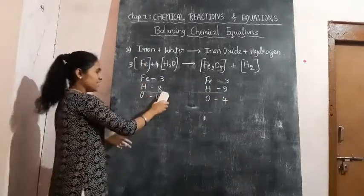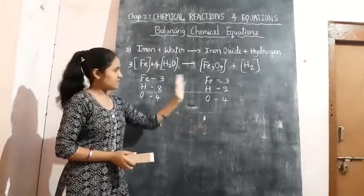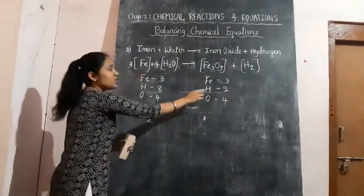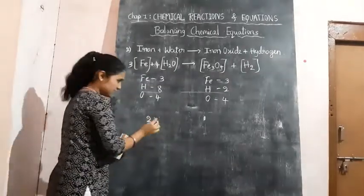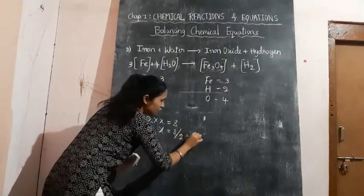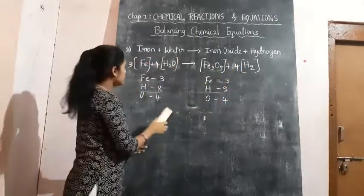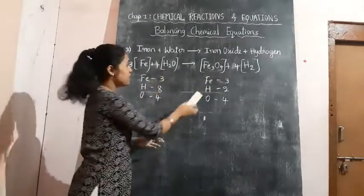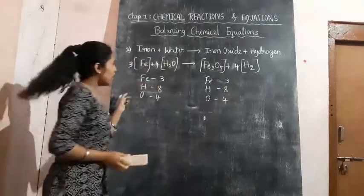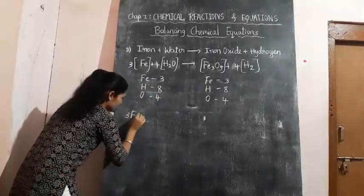Now we need to balance hydrogen. Reactant side has 8 hydrogen and product side has 2. The fewer atoms are on the product side, so we increase hydrogen there. We need to multiply H₂ on the product side by a number to get 8: X = 8 ÷ 2 = 4. So we multiply H₂ by 4, making it 4H₂. Now the product side hydrogen is 4 × 2 = 8. Checking all atoms on both sides — they are equal now. We have got the balanced equation.